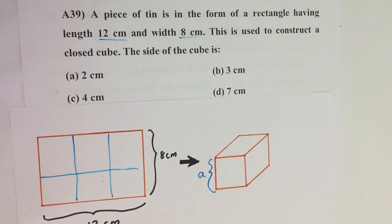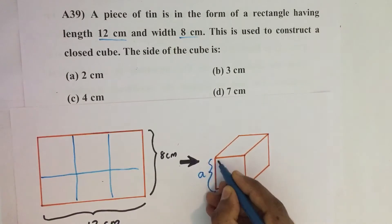So here we have a rectangular sheet of length 12 cm and width 8 cm. Now by using this sheet we have to make a closed cube. That means all its faces are closed. Then what will be the size of its side?